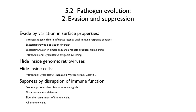Pathogens also suppress or disrupt immune function. They can do so by producing proteins that disrupt immune signals, by blocking intracellular defenses, by slowing the recruitment of immune cells, and by actually killing immune cells. All of these things happen.